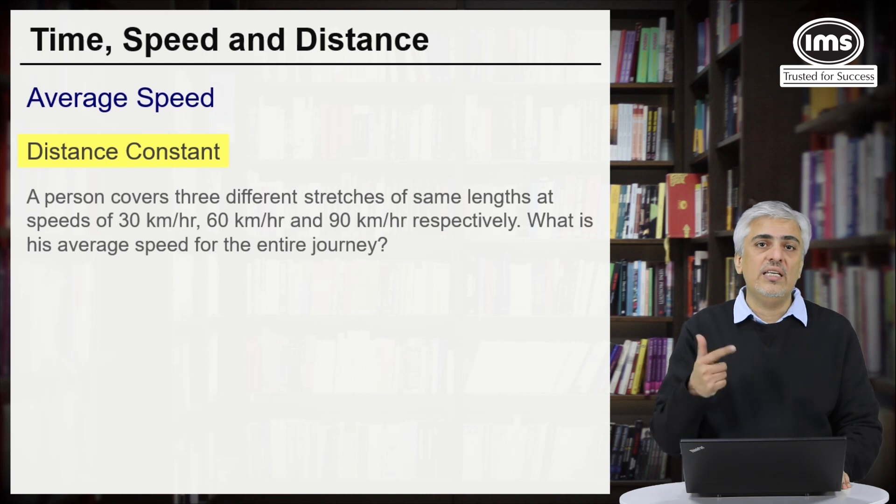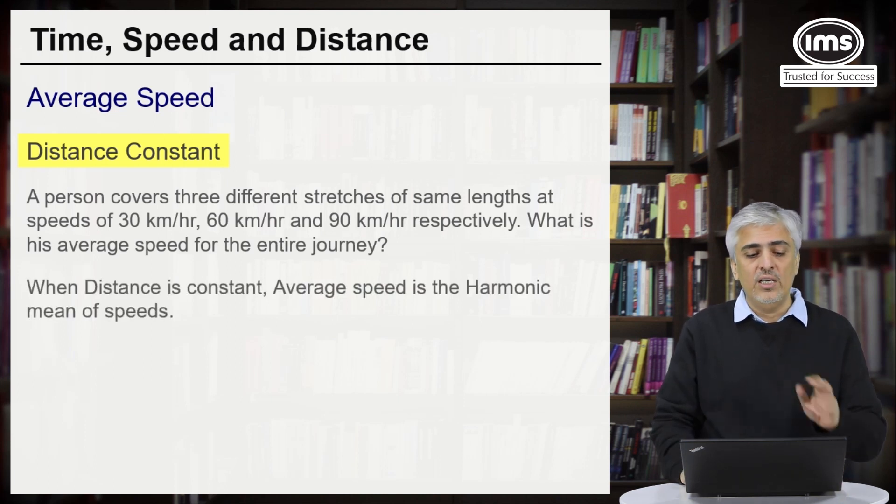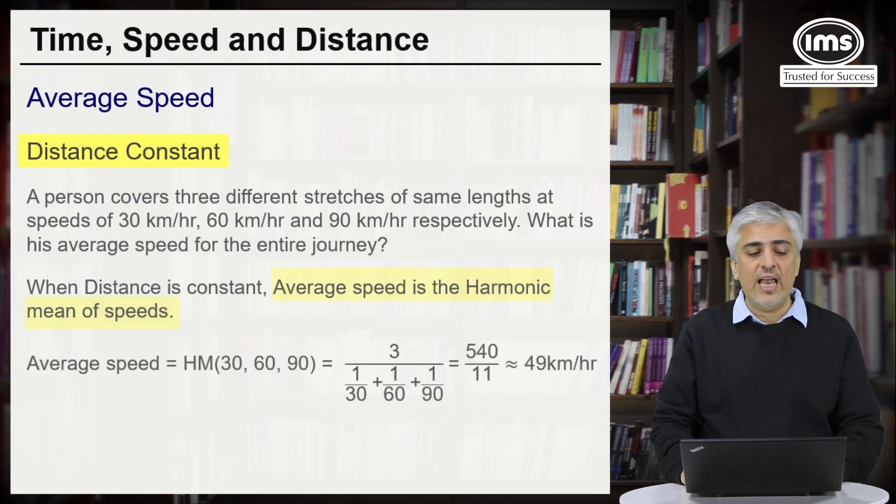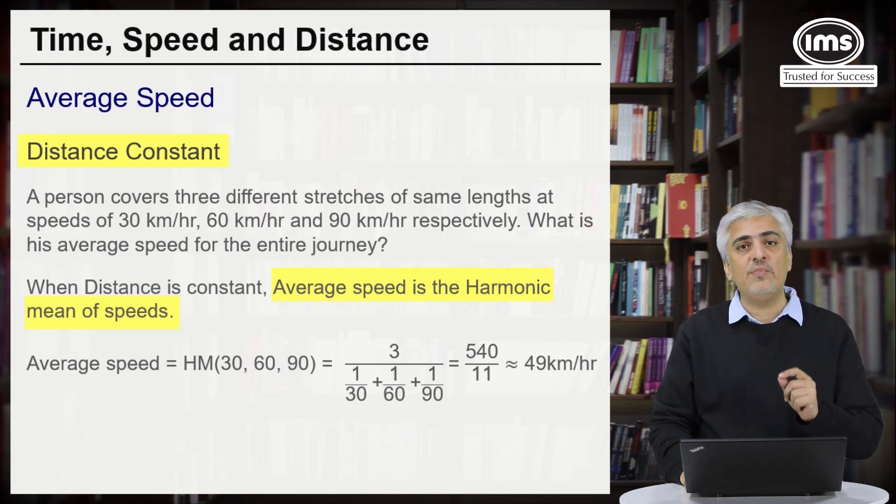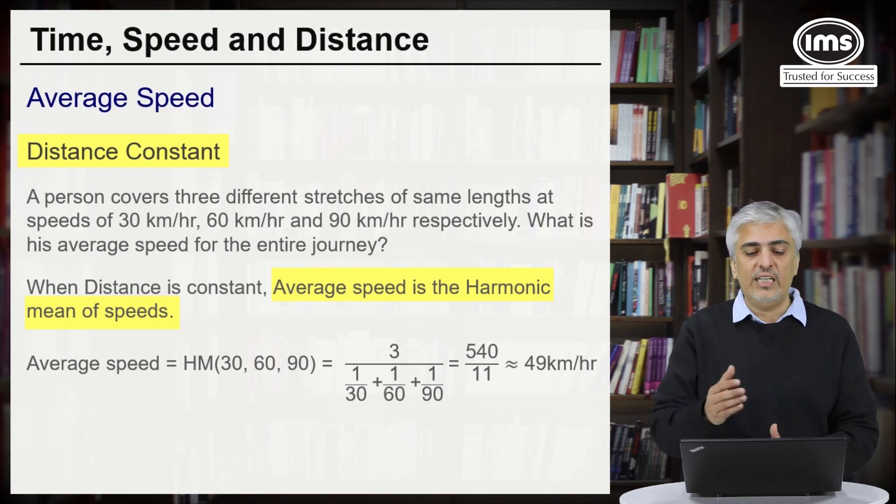In case 1 his speed is 30, case 2 speed is 60 and case 3 speed is 90. Now we can say whenever distance is constant, average speed will always be the harmonic mean of the speeds. Please remember this. Whenever distance is constant, average speed will be harmonic mean of the speeds. We know our formula for harmonic mean, that is if the harmonic mean of 30, 60, 90 has to be calculated, it will be 3 upon 1 upon 30 plus 1 upon 60 plus 1 upon 90. On solving that you get 49 km per hour.